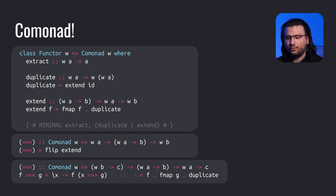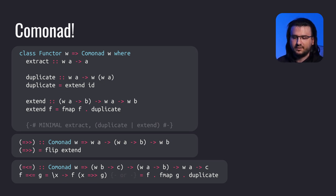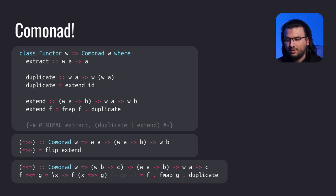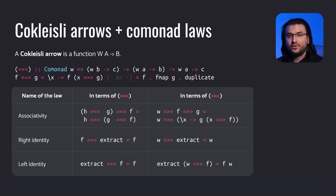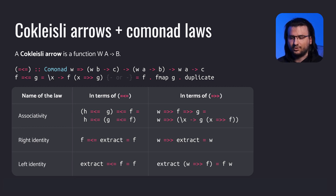There's also an operator form of extend, which looks kind of like bind but the equals sign is at the front. Below that is the co-Kleisle composition, which can be defined either with extend or duplicate. Just like the monad laws, there exist comonad laws which can be described with the co-Kleisle composition — it has to be associative, and extract has to be its right and left identity element.